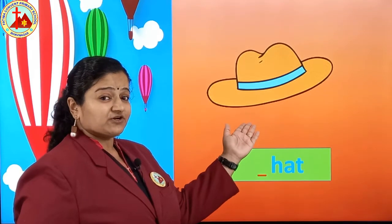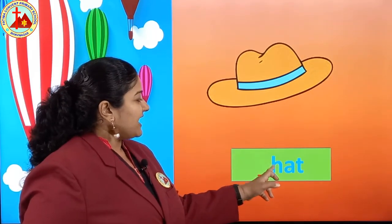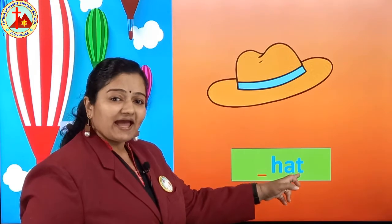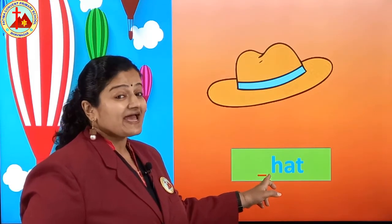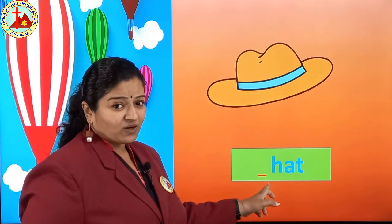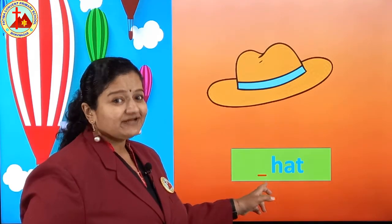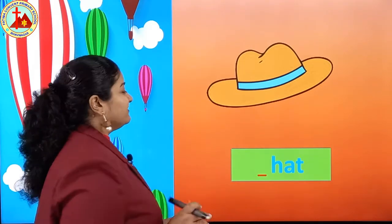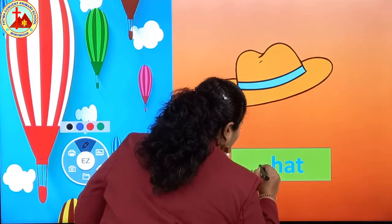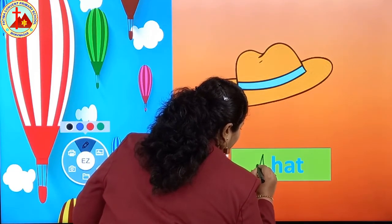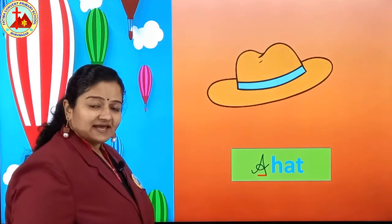Hat. Hat spelling is H, A, T — hat. First letter of hat is H. H is not a vowel, so we put only A. Write cursive capital A: a hat.